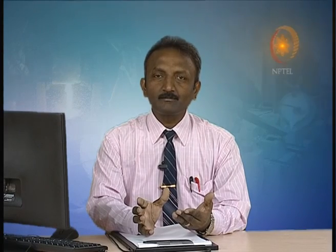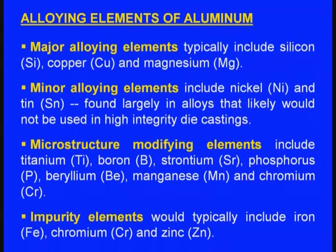Microstructure modifying elements modify the microstructure. These include titanium, boron, strontium, phosphorus, beryllium, manganese and chromium. We add these elements in extremely small amounts so that the composition is almost unaltered, but it will change the microstructure. Next there will be impurity elements — elements coming in through the aluminum without our knowledge and without our intention. Such elements are called impurity elements or residual elements.